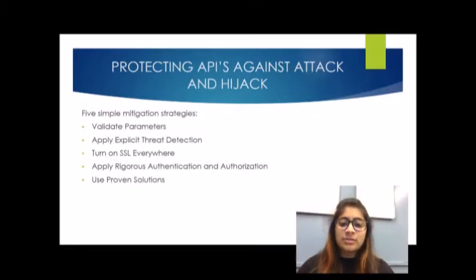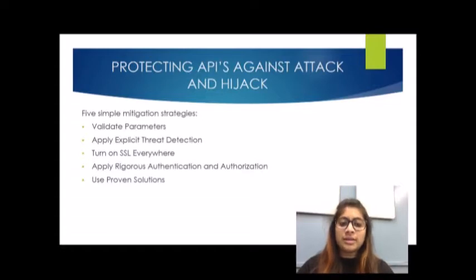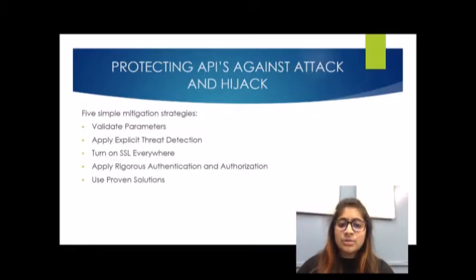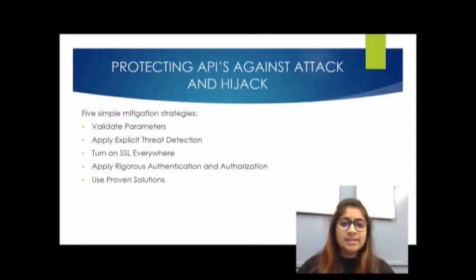SSL or TLS provides integrity on all data exchanged between a client and a server, and optionally provides client-side authentication using certificates, which is important in many environments. The fourth strategy is to apply rigorous authentication and authorization. User and app identity are concepts that must be implemented and managed separately. Consider authorization based on a broad identity context including factors such as incoming IP address, access time windows, device authentication, and geolocation.